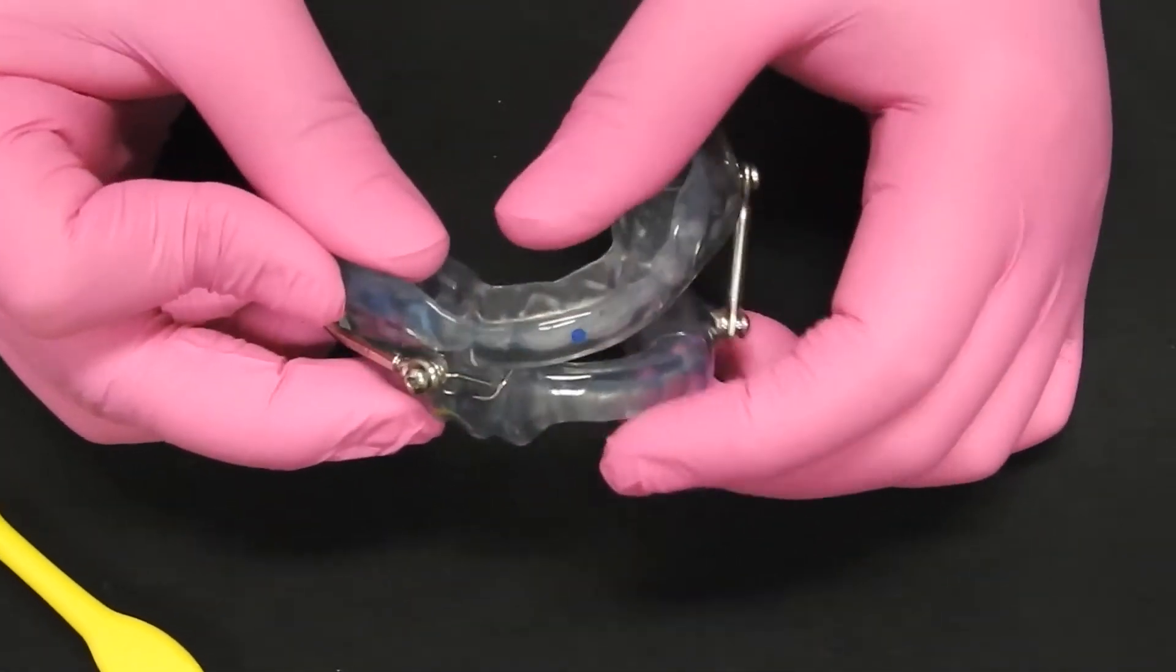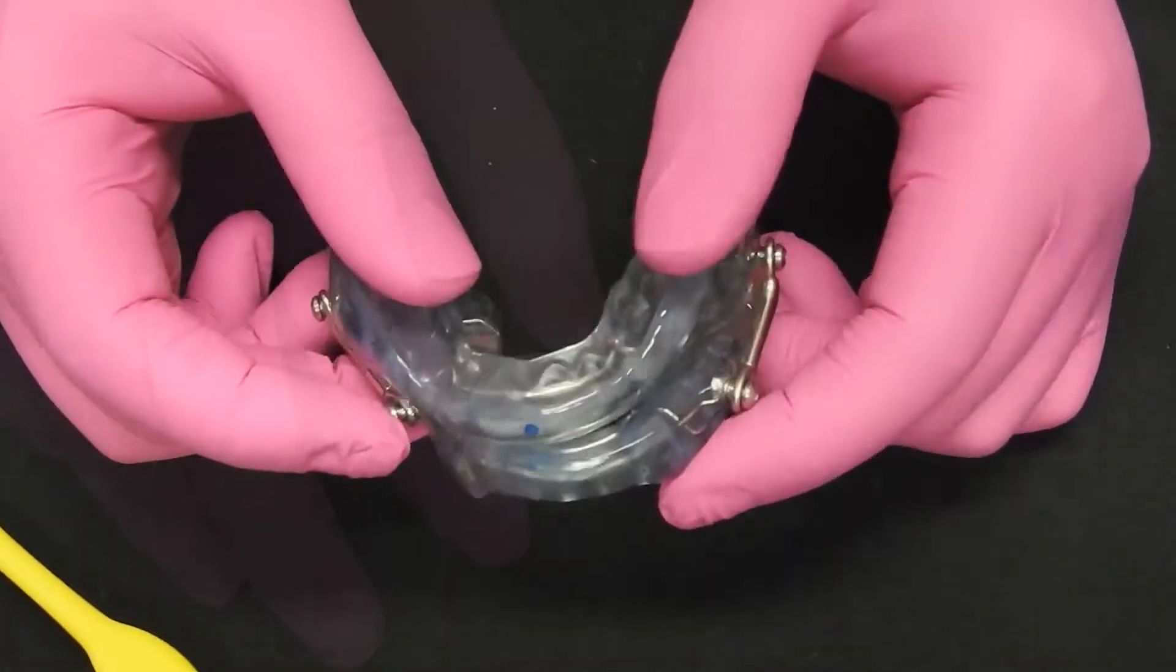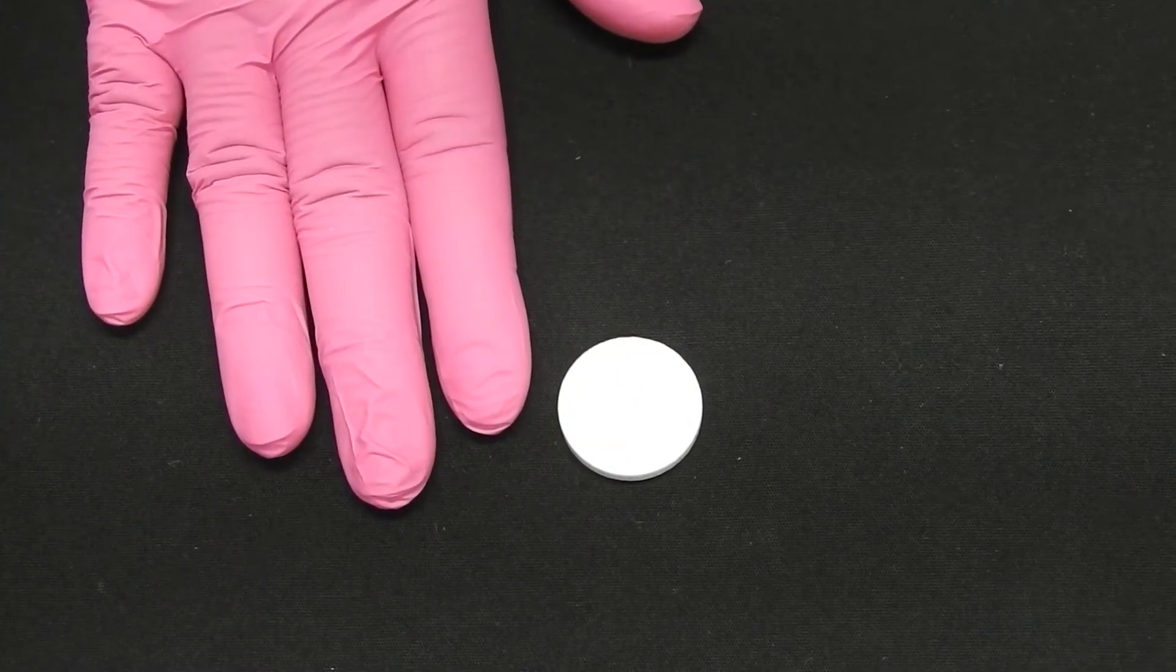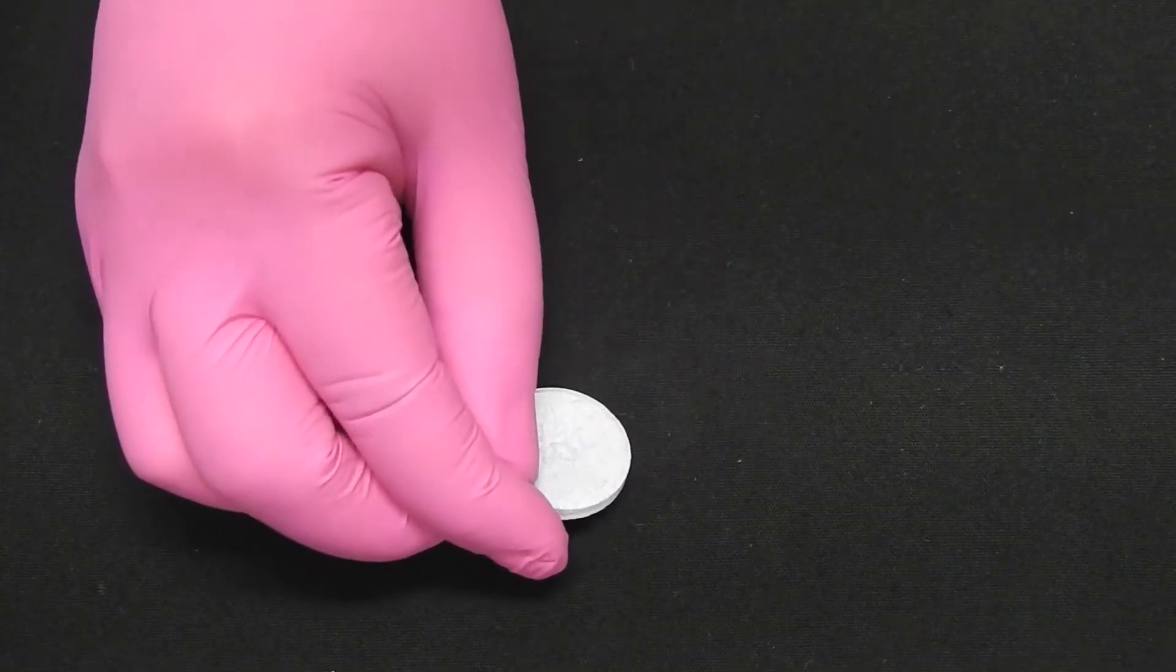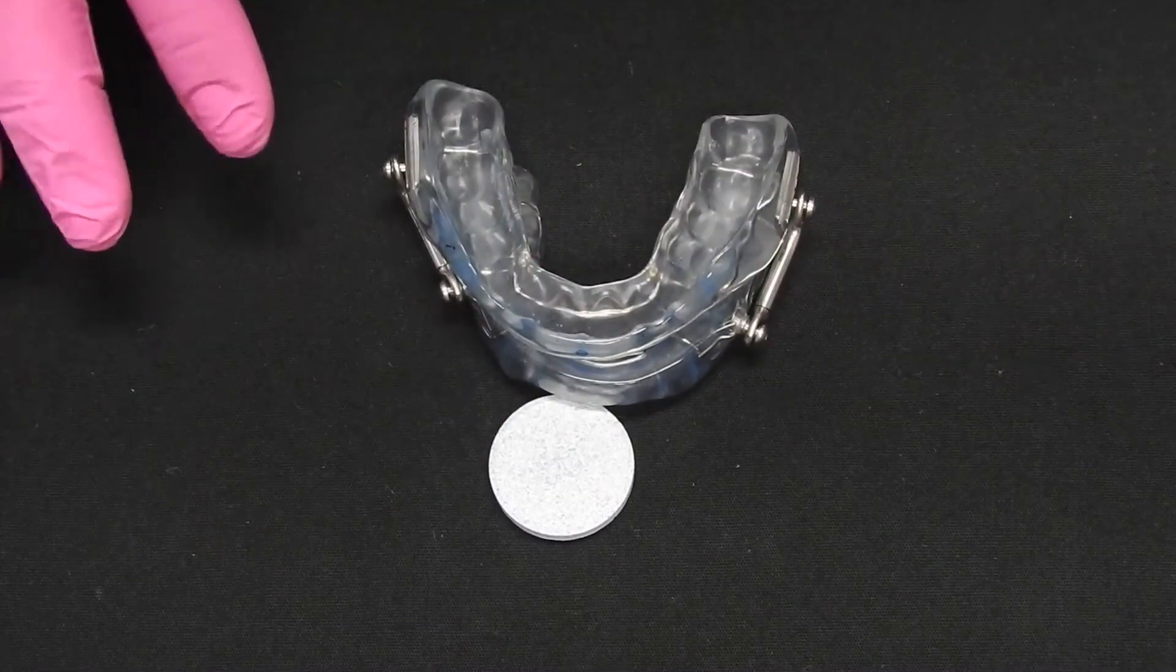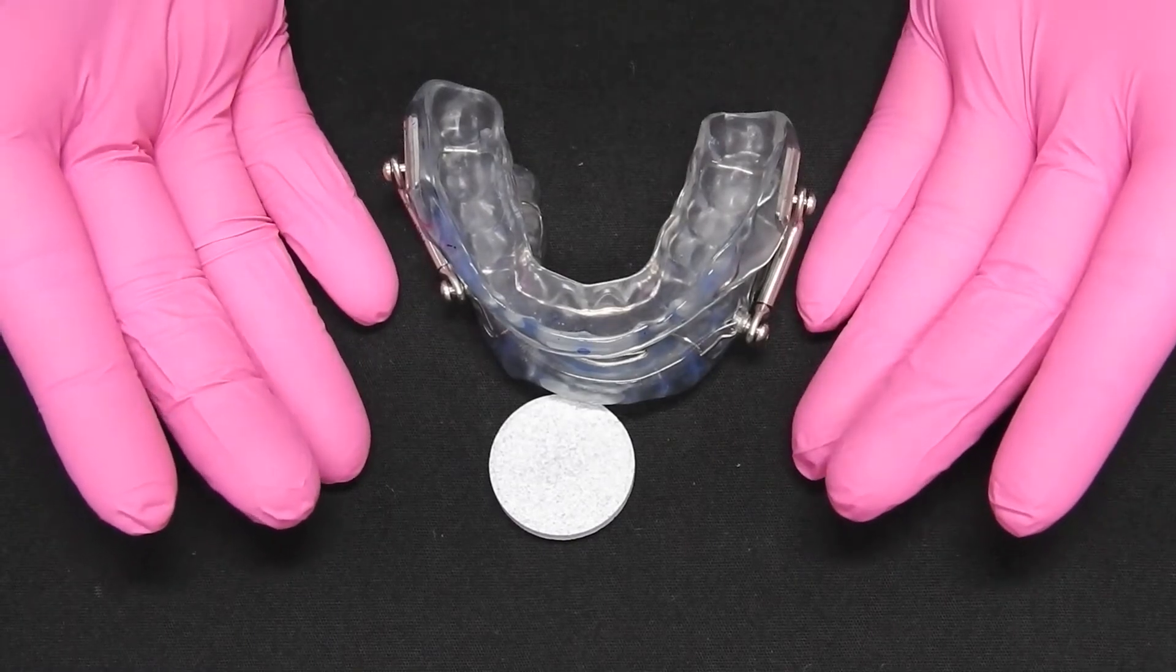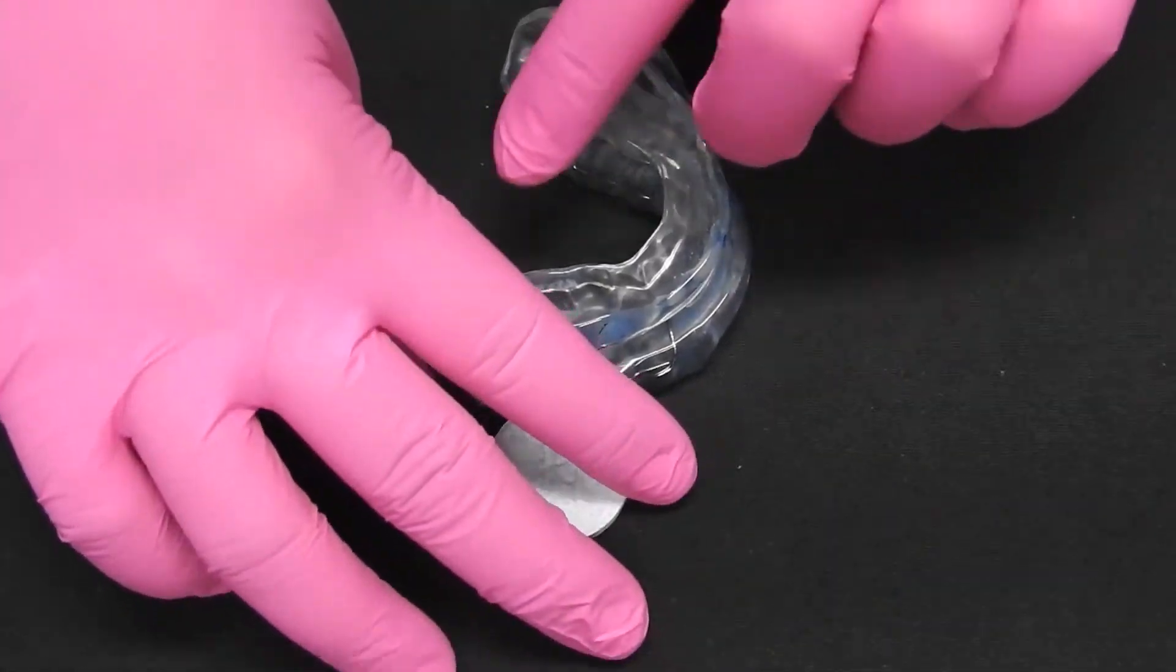Rinse it off. Make sure that you do not use hot water. This needs to be cool water. On a weekly basis you will use your cleaning tablets. To dissolve your tablet you'll need to use warm water. Allow the tablet to dissolve in the warm water and cool down before placing your device in the water. Let it soak for 15 minutes. This will freshen your device. Make sure to clean with your toothbrush on a daily basis.